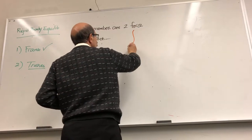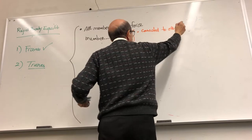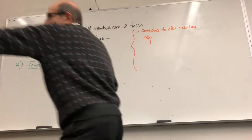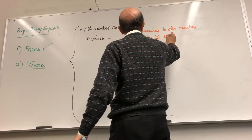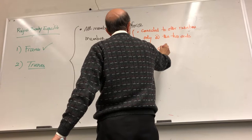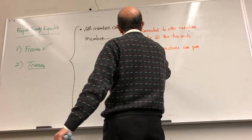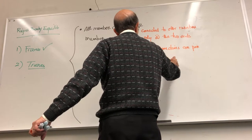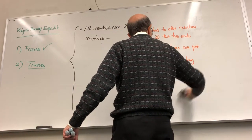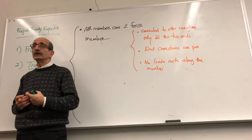Let me write that down. A two-force member is: connected to other members only at the two ends; the end connections are pins; and no load acts along the member. If a member has these three properties, it is called a two-force member. In trusses, every single member is a two-force member.